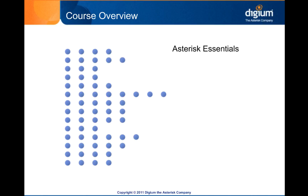The content of this course is broadly divided into three main categories. Several chapters focus on Asterisk fundamentals, including how it's installed, how it processes calls, and its basic features. Other chapters cover the various protocols Asterisk supports for making and receiving calls. We'll discuss the SIP and IAX VoIP protocols, as well as the more traditional telephony technologies.